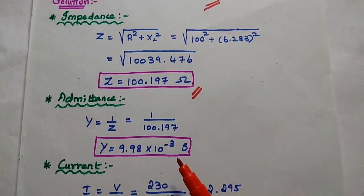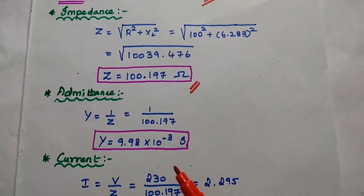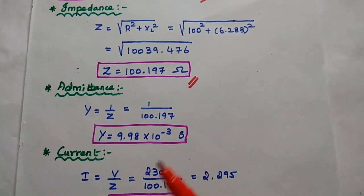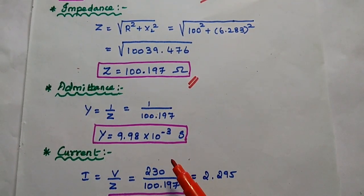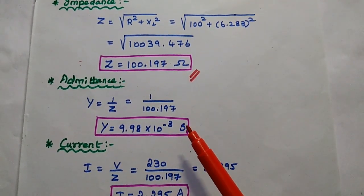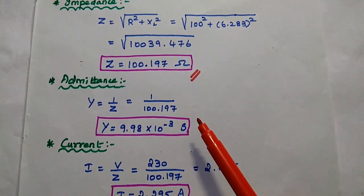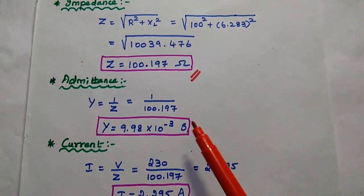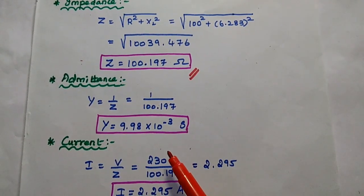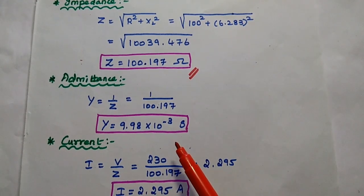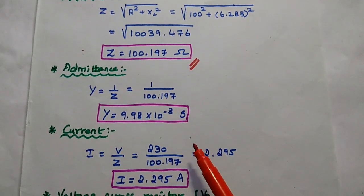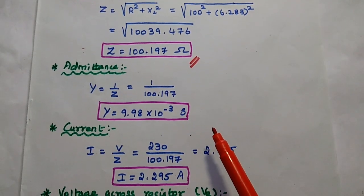Next we are going to find out the admittance. Admittance is the reciprocal of impedance, that is Y is equal to 1 by Z. Here we can simply substitute the Z value, that is 100.197. Then 1 by 100.197 is equal to 9.98 into 10 to the power minus 3 Siemens.